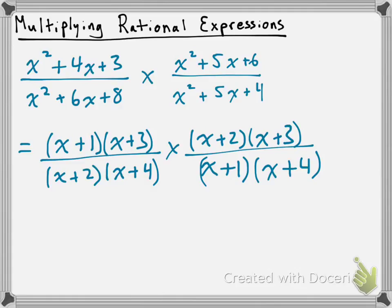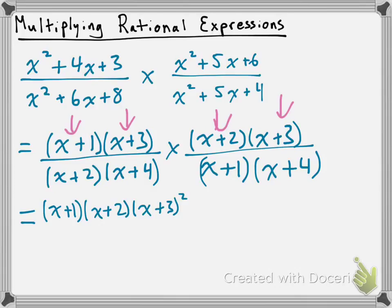Now that everything has been factored, I'm going to multiply these expressions by bringing them all together into one very large fraction. Remember that when you're multiplying fractions, you multiply the numerators and then you multiply the denominators. I want you to notice that in the numerators we have x plus 1, x plus 2, and a common factor of x plus 3 appearing twice — so that gives us x plus 3 squared. On the bottom, we're going to have 2 factors of x plus 4, so we write this as x plus 1 times x plus 2 times x plus 3 squared in the numerator, over x plus 1 times x plus 2 times x plus 4 squared.